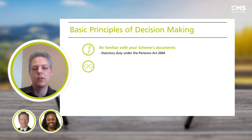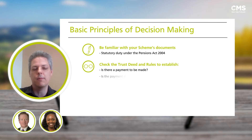In other words, where a member passes away, is there a payment required to be made by the scheme rules? If so, is it discretionary? And what conditions, if any, apply?